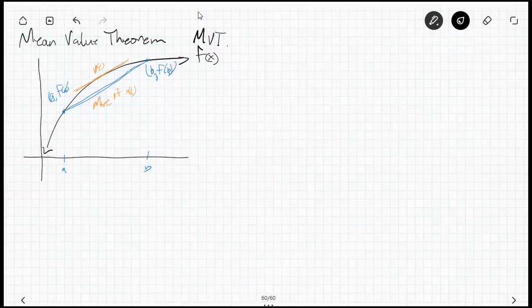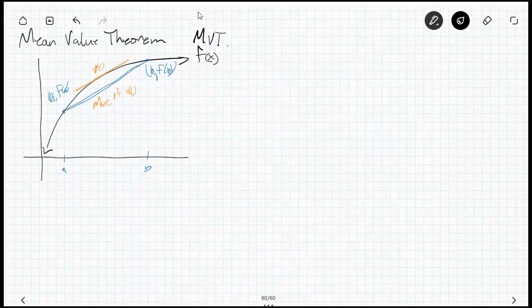So, let me give you the actual formal mean value theorem. Suppose that F is differentiable on a closed interval. If it's differentiable on a closed interval, we also know that it's continuous and limits exist everywhere.